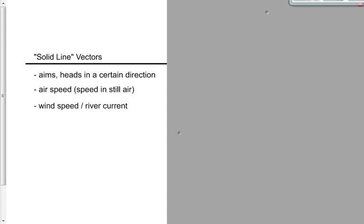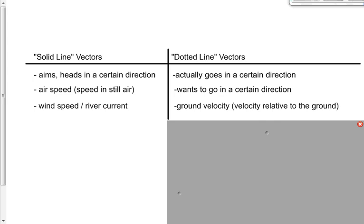The dotted line vectors are where I actually go — when the airplane, ship, or boat actually travels in a certain direction. Actually going to Edmonton in a car, or actually going to Regina in a plane — those are dotted line vectors. They're not what contributes to where I go; they are where I go.